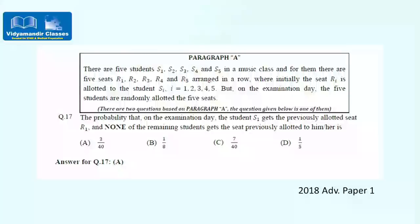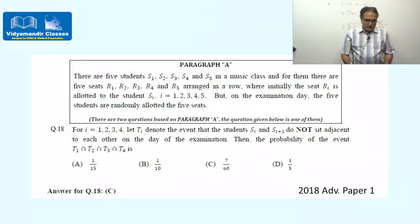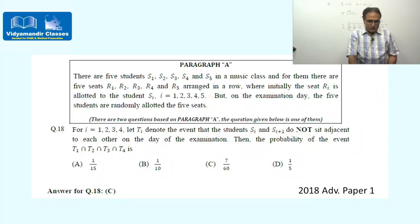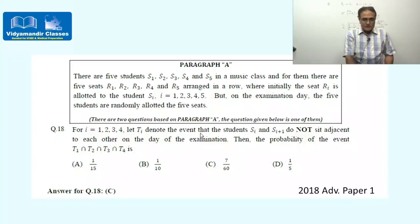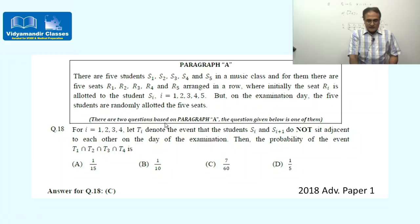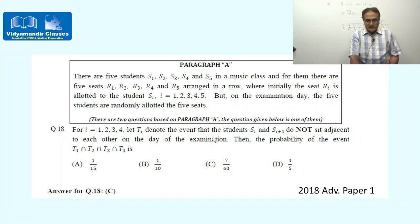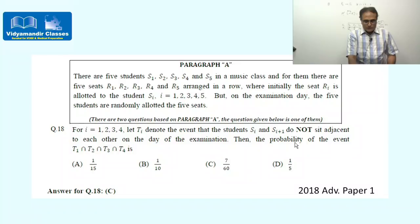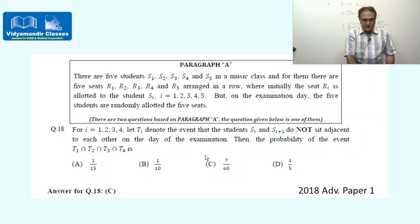Now the second part of the question from the same passage. For i from 1 to 4, Ti denotes the event that student Si and Si+1 do not sit adjacent to each other on the examination day. So T1 means S1 is not adjacent to S2, T2 means S2 is not adjacent to S3, T3 means S3 is not adjacent to S4, and T4 means S4 is not adjacent to S5. We need to find the probability of T1 ∩ T2 ∩ T3 ∩ T4.